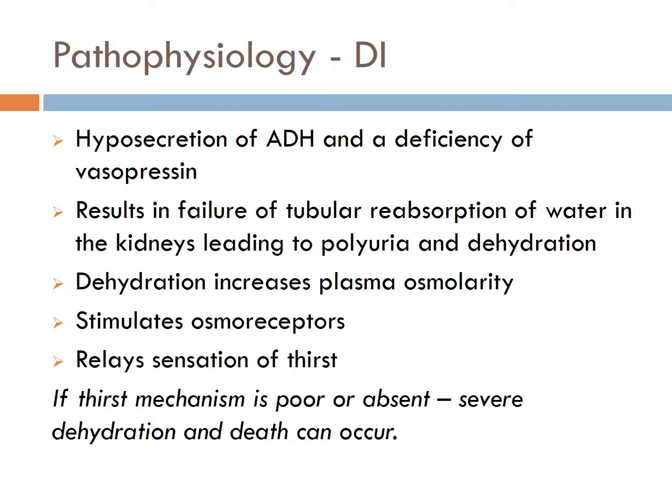Diabetes insipidus is caused by an abnormality in the functioning or levels of ADH, also known as vasopressin. Manufactured in the hypothalamus and stored in the pituitary gland, ADH helps regulate the amount of fluid in the body. In healthy individuals, when bodily fluids are depleted, ADH is released from the pituitary gland, which prevents the excretion of fluids in the form of urine. ADH acts on the kidneys to increase water permeability in the collecting duct and distal convoluted tubule, and water is reabsorbed.